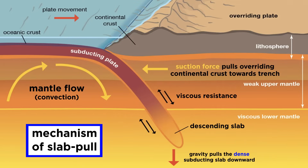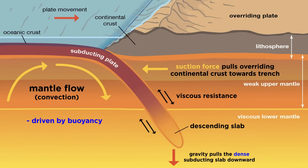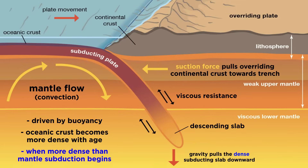When subducting oceanic crust sinks into the mantle, it creates a suction-like force in its wake, which pulls the subducting slab further into the mantle. This slab-pull force is driven by buoyancy, due to oceanic crust becoming more dense with age. Eventually it becomes more dense than the mantle beneath it, which is when subduction can begin. According to the current scientific consensus, slab-pull is the main force that causes plate tectonics.